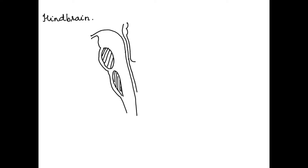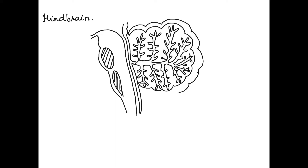On the dorsal side we have the cerebellum. Right now I am drawing the tree-shaped white matter inside the cerebellum. This structure inside looks like a fern tree, which is why it is called a tree-like structure.